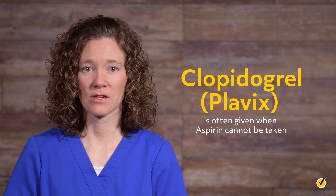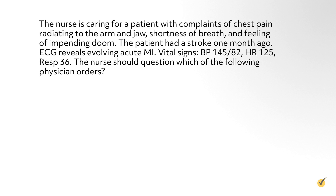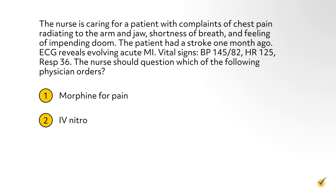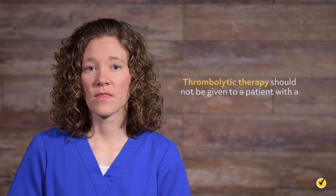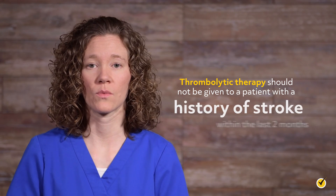Second review question: The nurse is caring for a patient with complaints of chest pain radiating to the arm and jaw, shortness of breath, and feeling of impending doom. The patient had a stroke one month ago. ECG reveals evolving acute MI. Vital signs are blood pressure 145/82, heart rate 125, and respirations 36. The nurse should question which order: morphine for pain, IV nitro, beta blocker, or thrombolytic therapy? The answer is thrombolytic therapy — it should not be given to a patient with a history of stroke within the last two months. Thank you for watching this video about antiplatelets and thrombolytics.